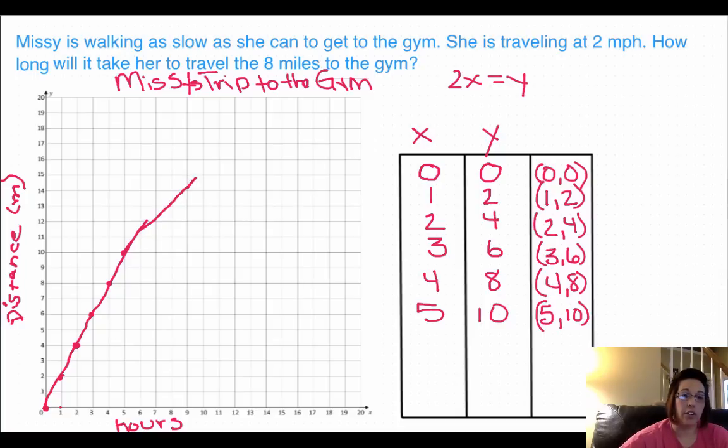Our line kind of curved there at the end, we can fix that. So let's look, we can predict that after six hours, she should have traveled 12 miles. Seven hours, she should have traveled 14. So our line really should have gone up like this and more along that path rather than this path over here.